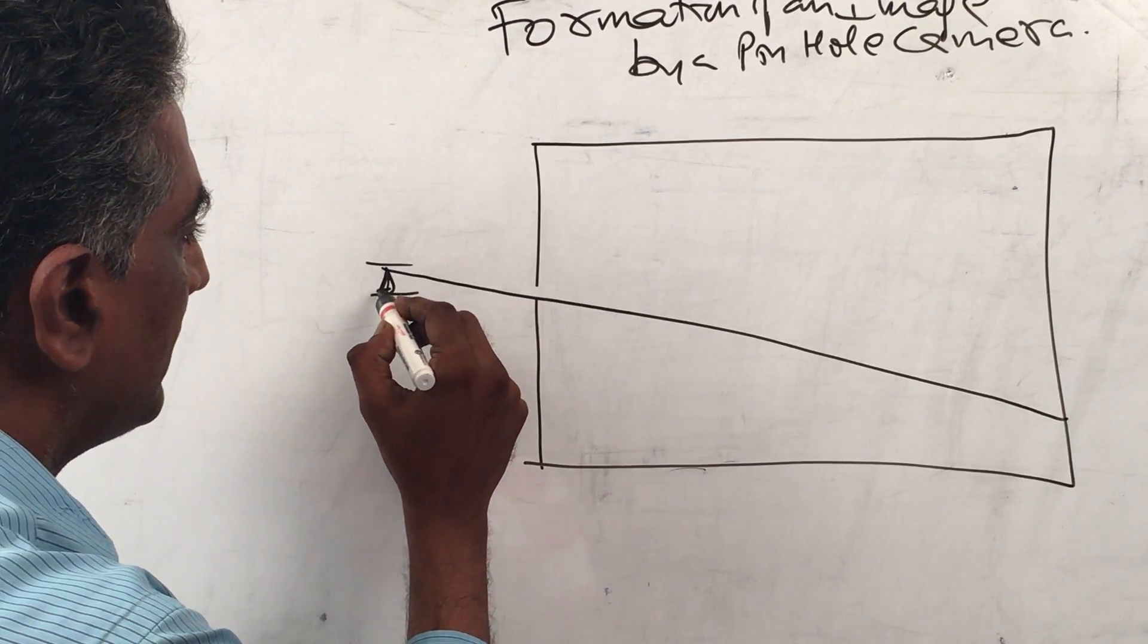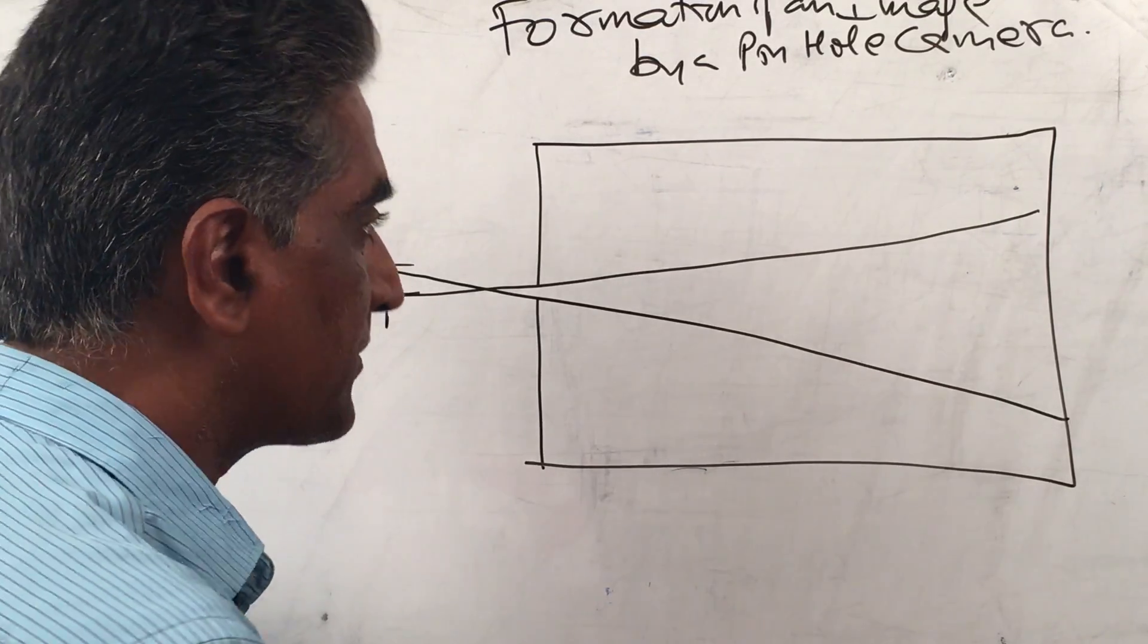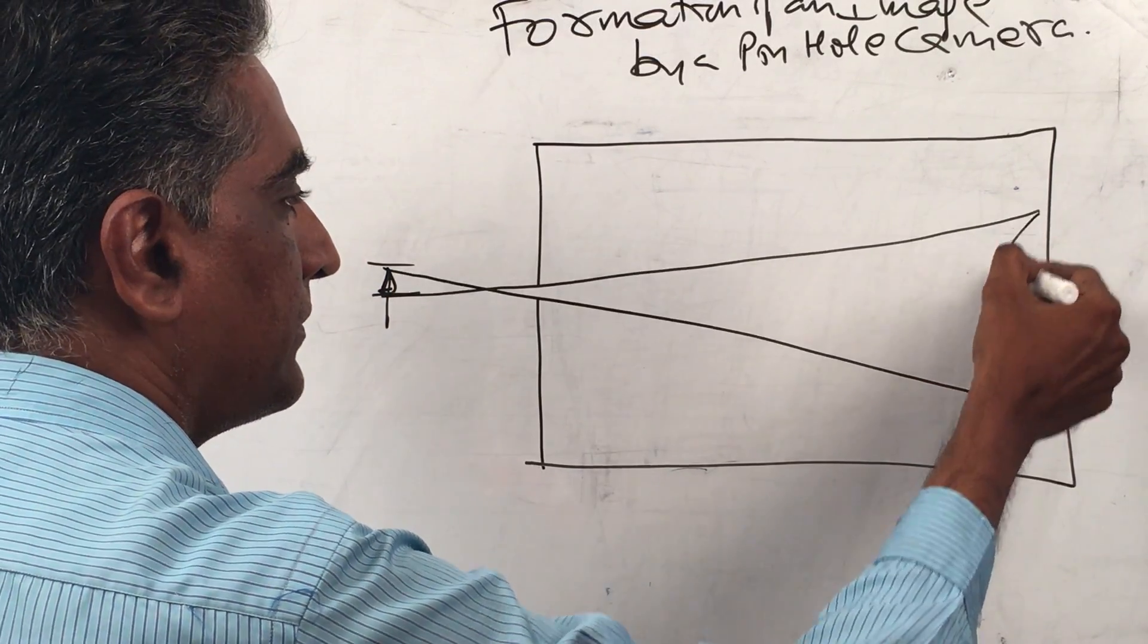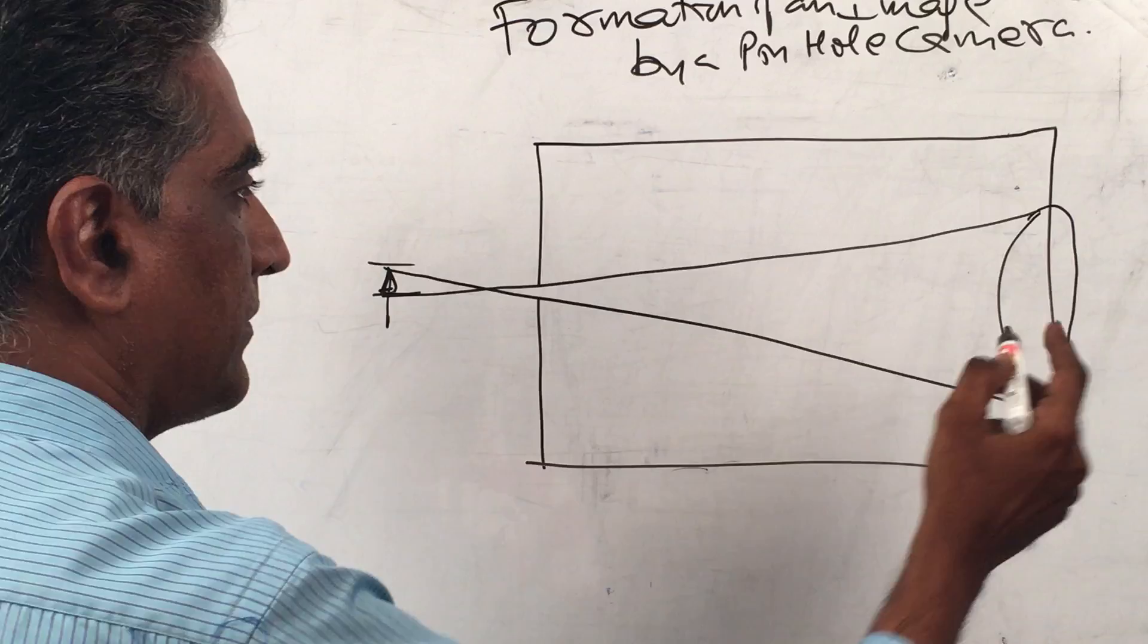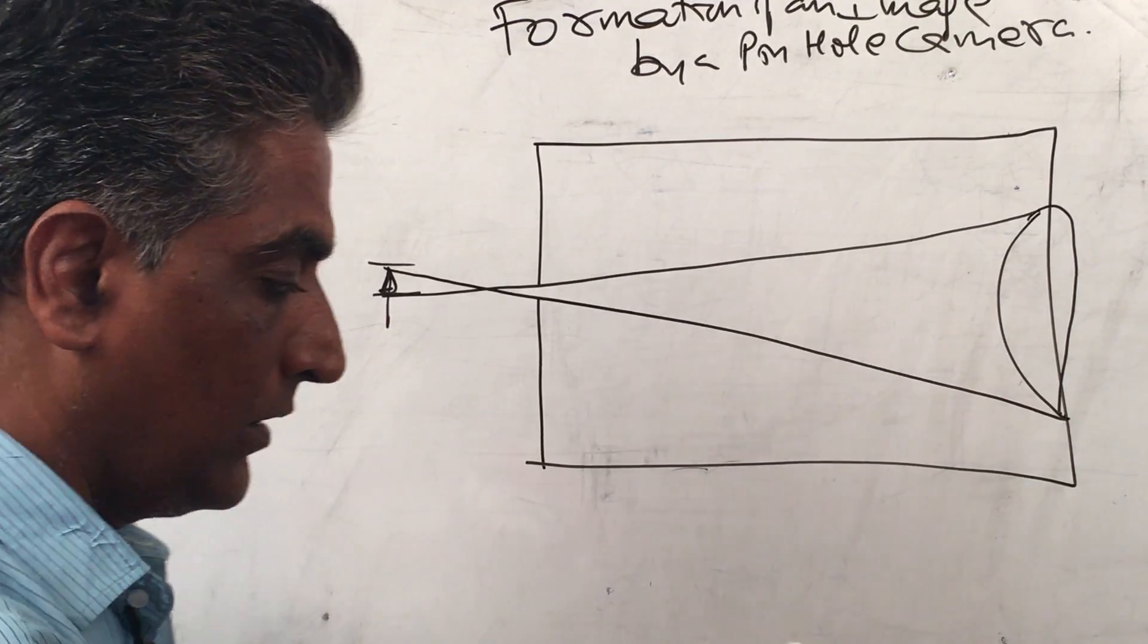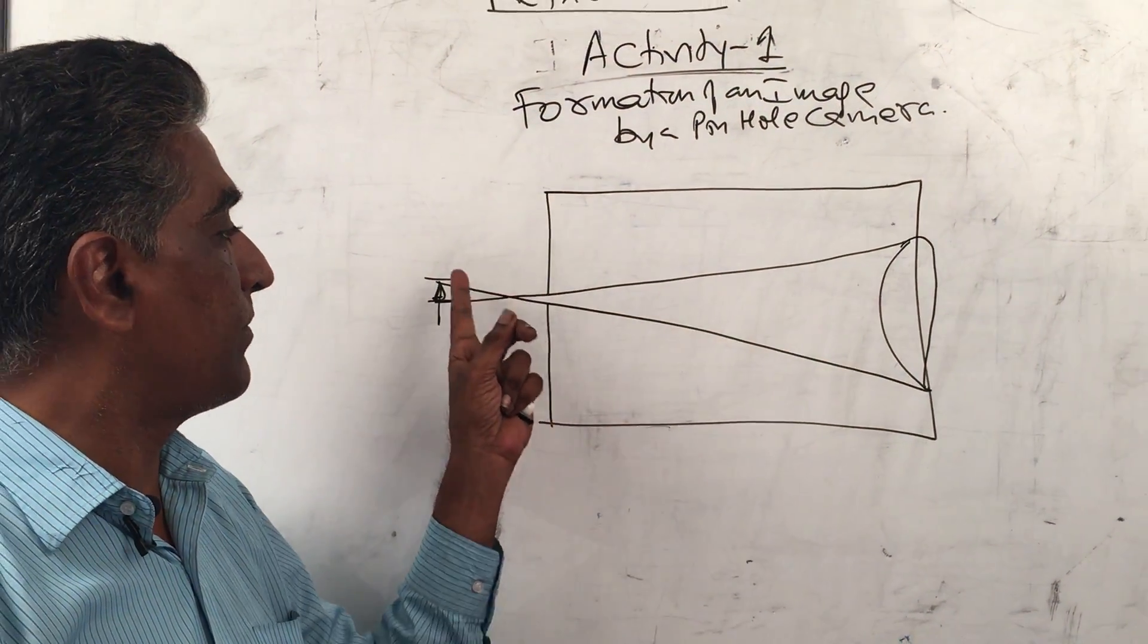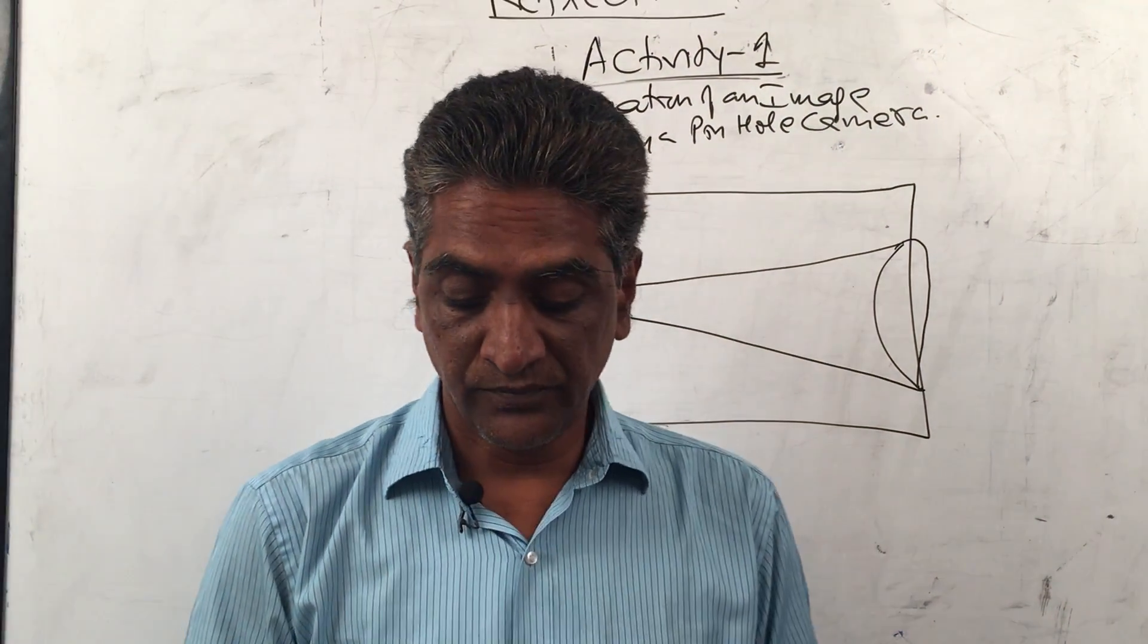This below, this is a candle part, this small part. So this goes and forms there and this becomes an inverted image. So it goes like that. What would happen if you increase the size of the hole of the pinhole camera? If you increase the size of the hole, many rays will pass through and it becomes blurred.